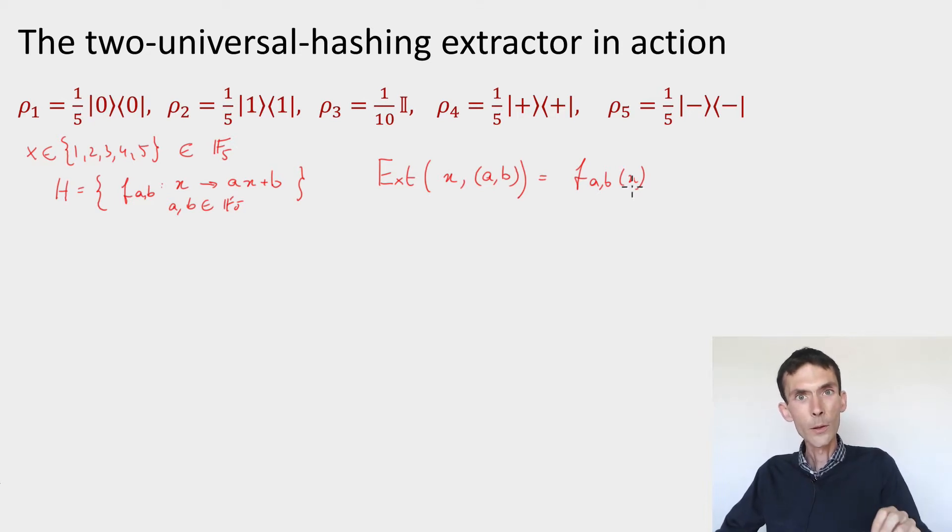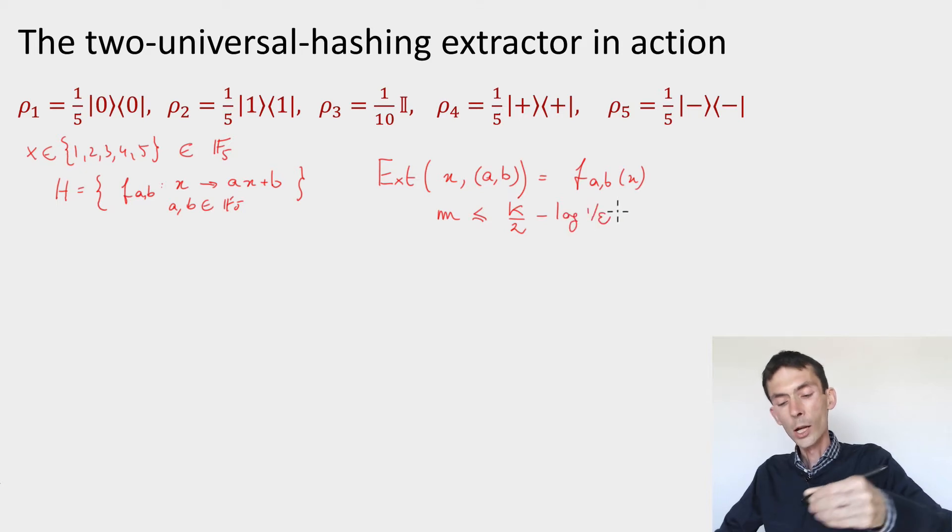Remember the condition for the two-universal hashing extractor to work is that the output length m should be less than the input min entropy k divided by 2 minus log 1 by epsilon, where epsilon is the target error that we want to achieve. Here, because the input takes only five possible values, it doesn't really make sense to set an epsilon and k. We'll have to compute the min entropy of the source here, so let's just hash this down to just one bit.